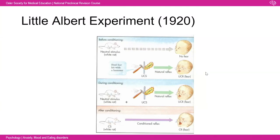An example of fear conditioning is the Little Albert experiment from the 1920s — an experiment we would not allow today. A white rat was shown to baby Albert, who was not scared of it. Then a steel bar was struck every time the rat was shown, making him cry. Eventually, the white rat alone caused Albert to cry, demonstrating long-lasting conditioned fear. It's immoral, but illustrates the point clearly.